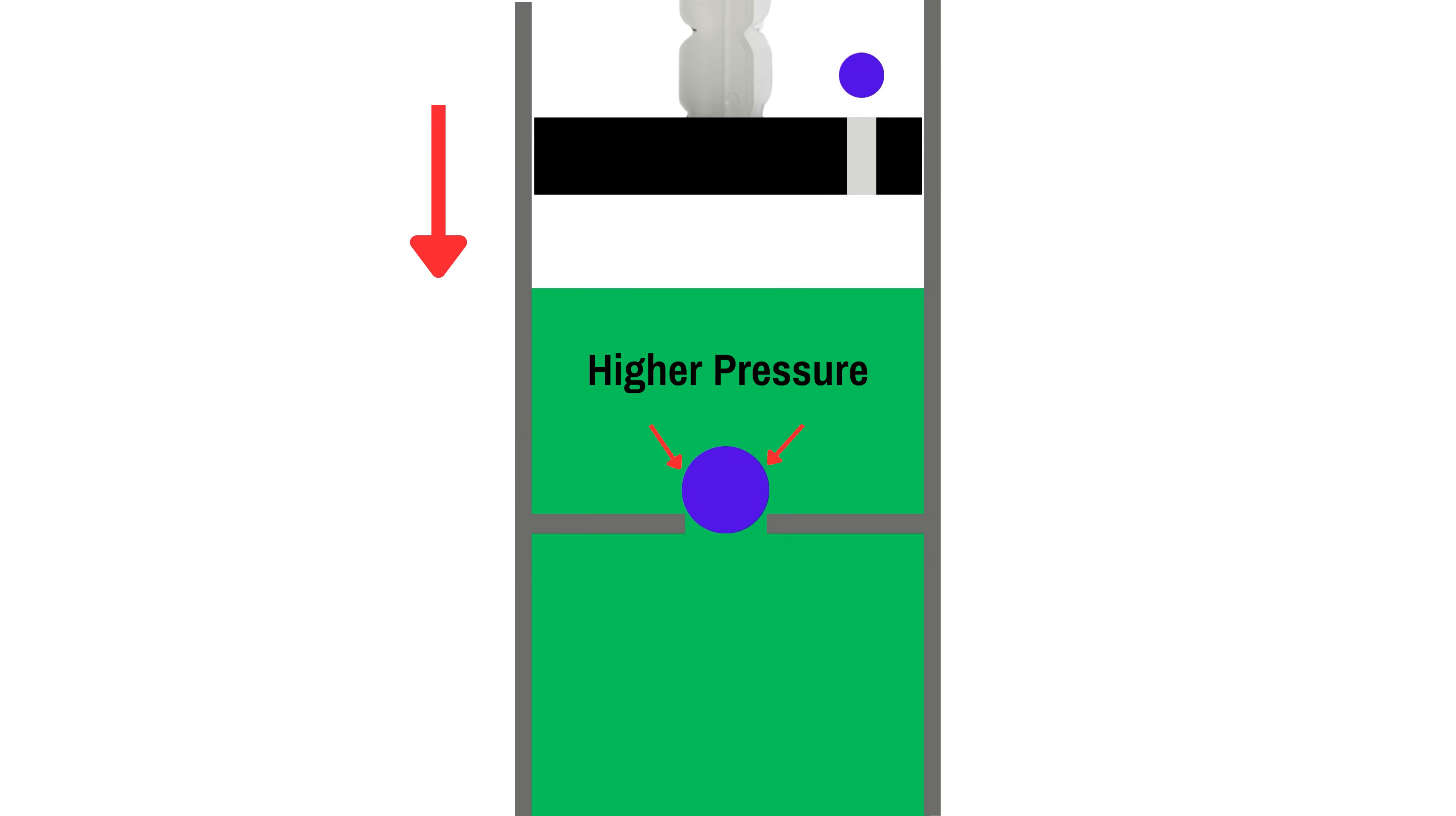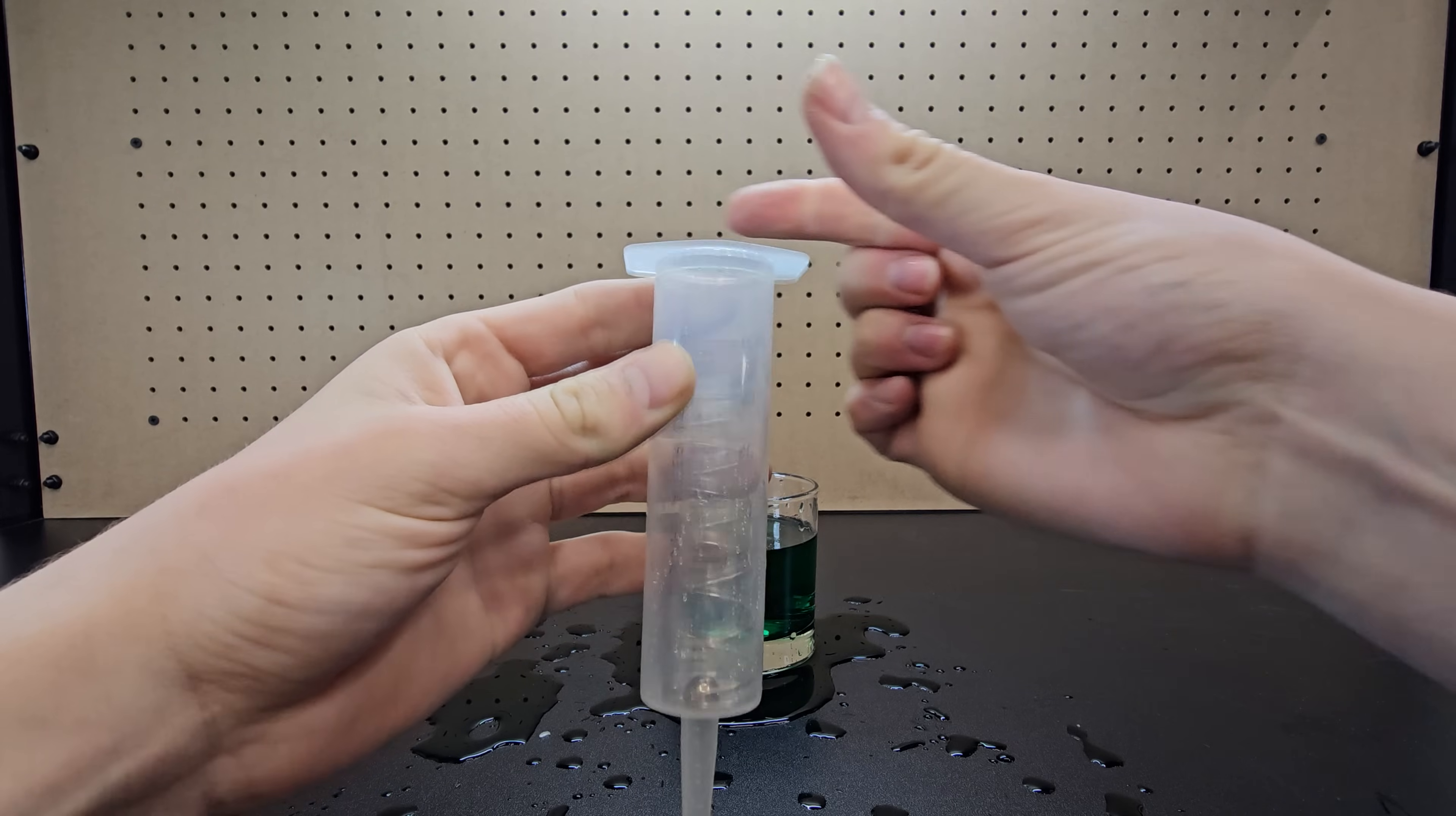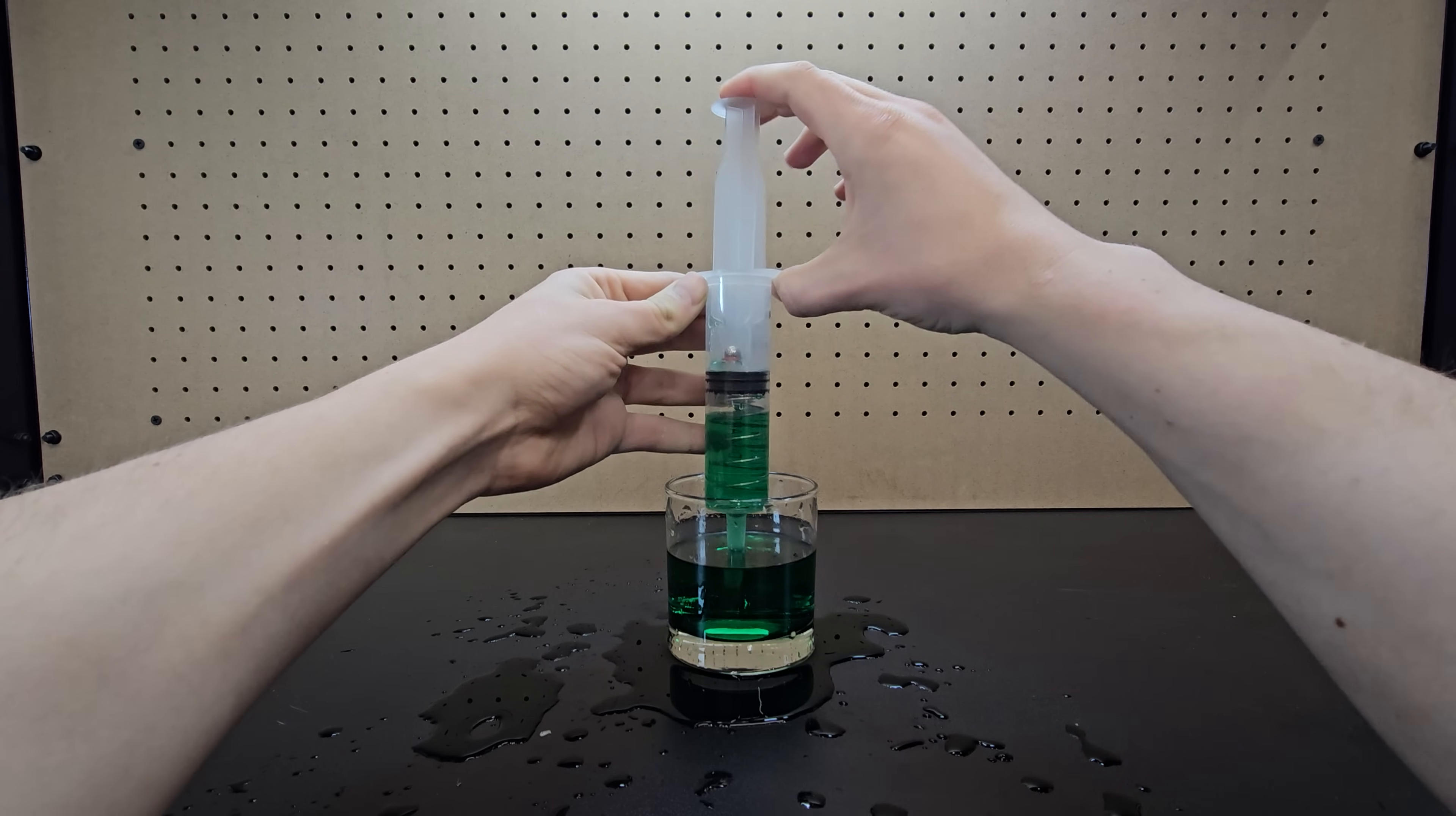Then pushing on the syringe once again blocks liquid from leaving the bottom valve, but opens the top valve allowing liquid to exit out the top. Now if you place a spring in the syringe to automatically return the piston to the top, you've got a semi-successful pump mechanism as you can see here.